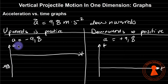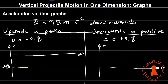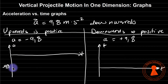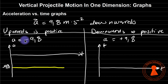Since it's a constant, let me draw and change the color and width. So this is negative 9.8 — this is your graph. Whatever you do, your acceleration will always be constant.